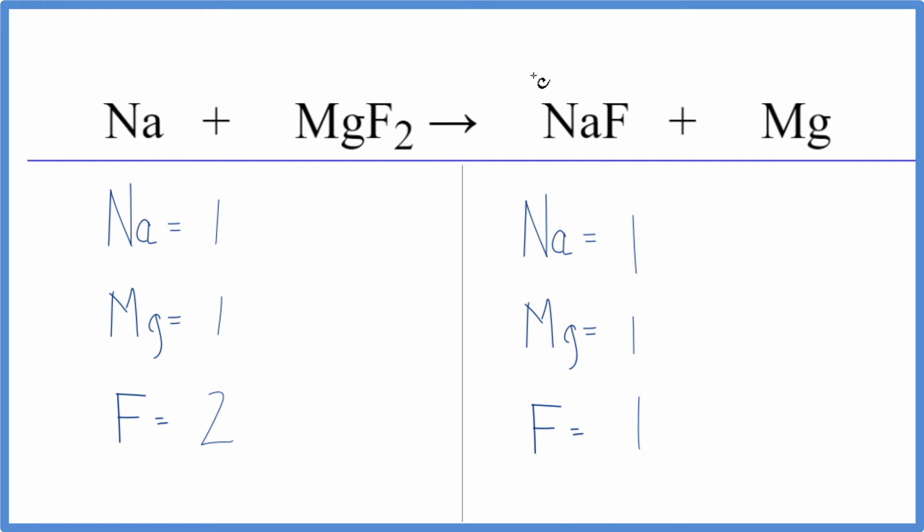It looks like if we double this right here, the NaF, we'll have one times two. That would give us two sodiums, but the two applies to everything. So one times two, that would give us two fluorine atoms. So these are balanced.